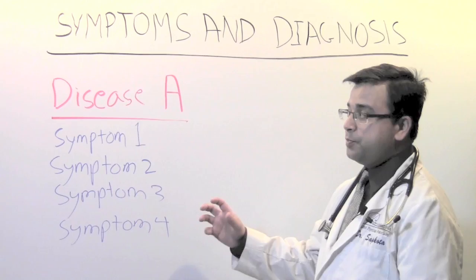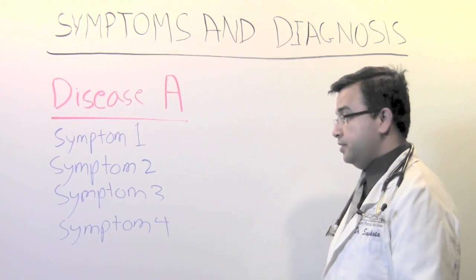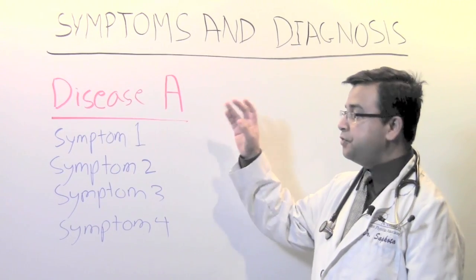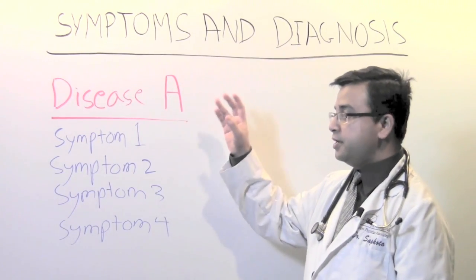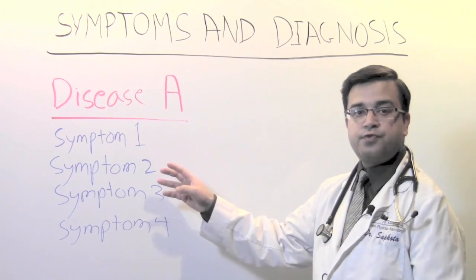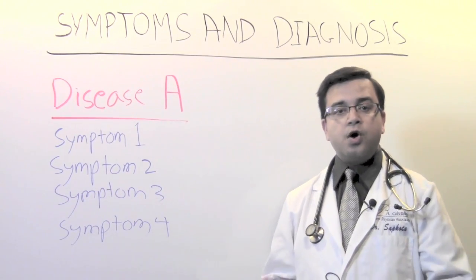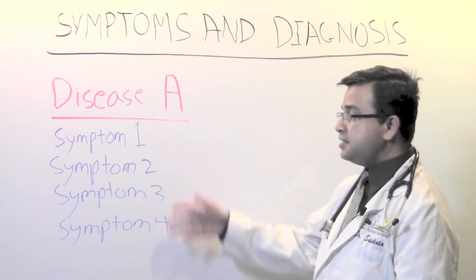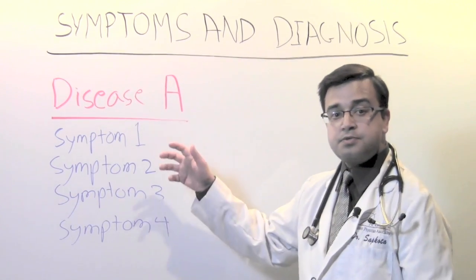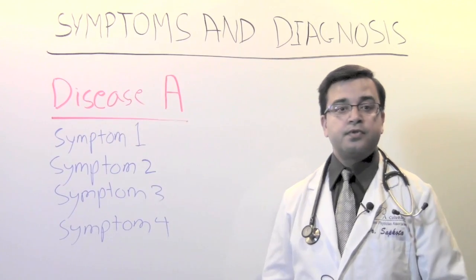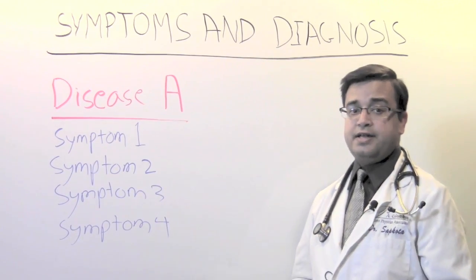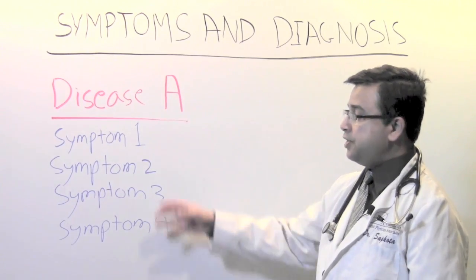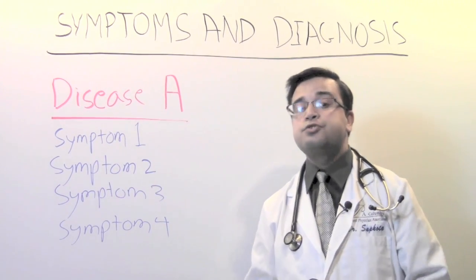For example, let's call it disease A. All they talk about is how disease A has these four symptoms — symptom 1, symptom 2, symptom 3, and symptom 4. People learn that if you have the combination of these four symptoms, you have disease A. They also learn that if someone has been diagnosed with disease A, they are likely to have these four symptoms. But is that true?